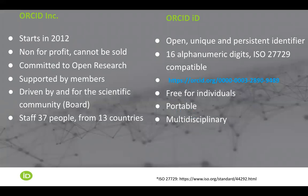This is where ORCID enters the scene. ORCID started as an organization in 2012. It's a not-for-profit organization — it cannot be sold. ORCID is committed to open research; in fact it is already part of the open infrastructure for research. ORCID is supported by its members and is driven by and for the scientific community through a board that is elected and rotating. We are a small organization with a staff of 37 people from 13 countries, and we have worked remotely since the beginning.